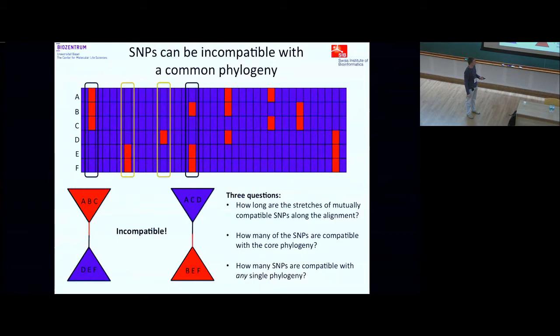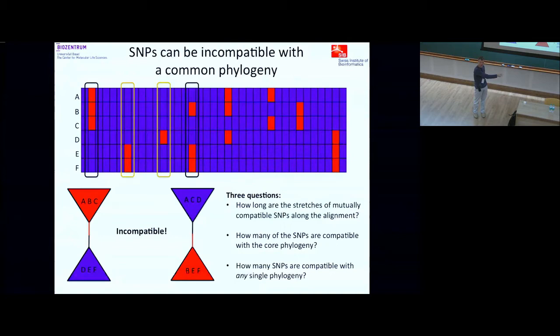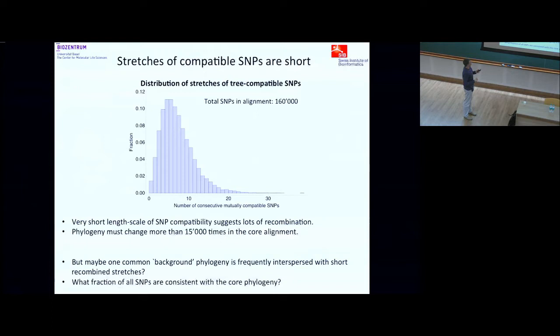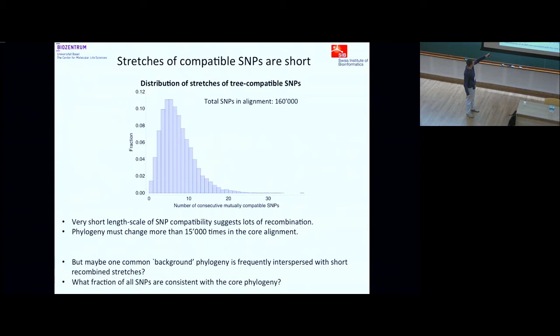With 160,000 SNPs in this alignment, that means the phylogeny must change at least 15,000 times as we go along it. The phylogeny changes many many times. But it could still be that there are many inserted pieces with different phylogeny while there's still a background of columns that follow the clonal phylogeny. So we asked: is there maybe a large set of SNPs that are all consistent with one phylogeny?